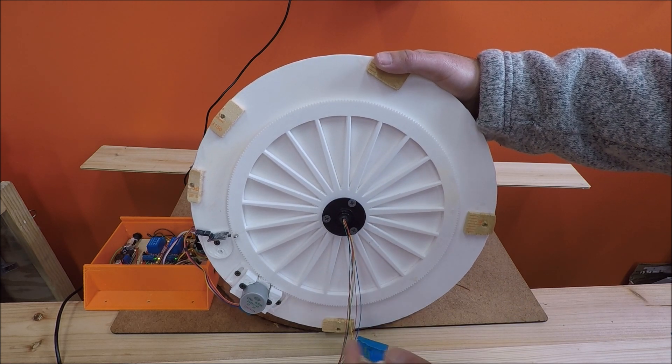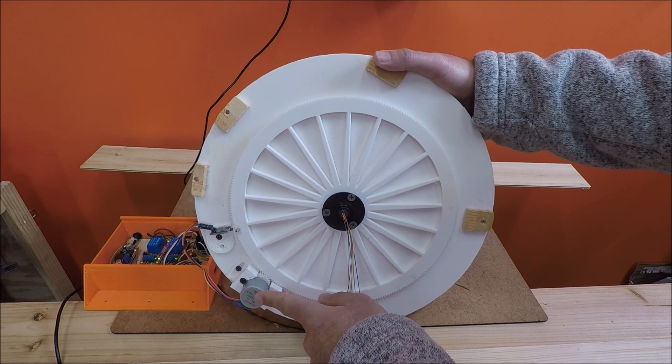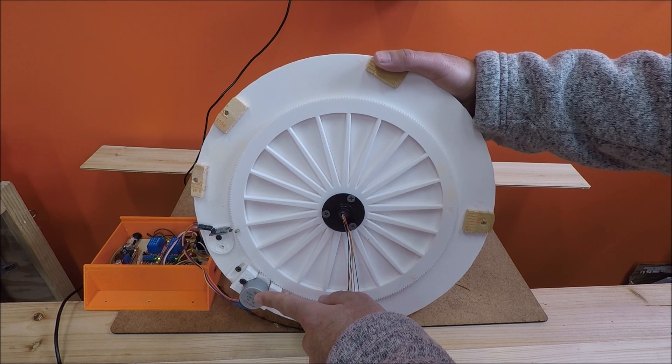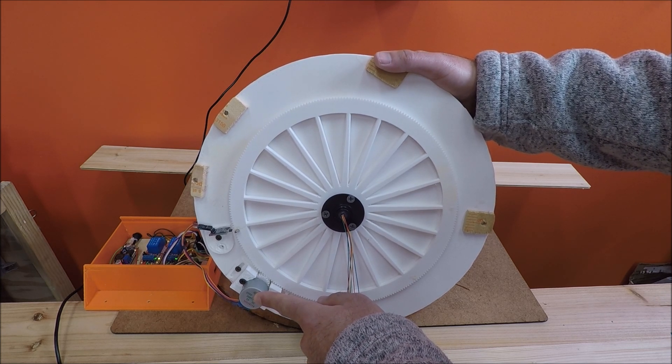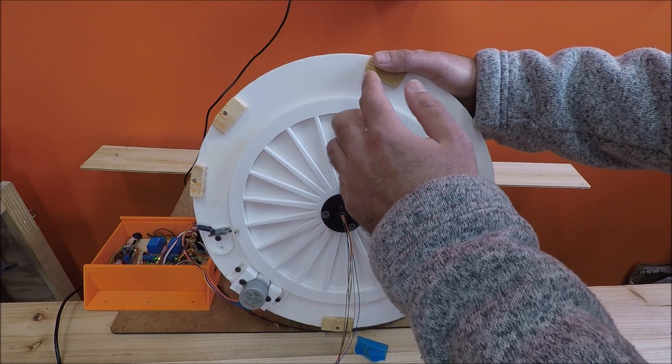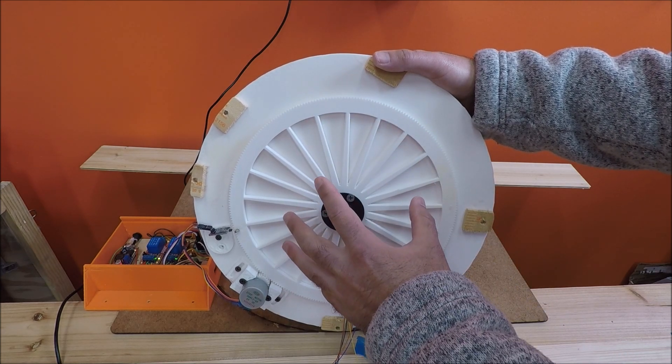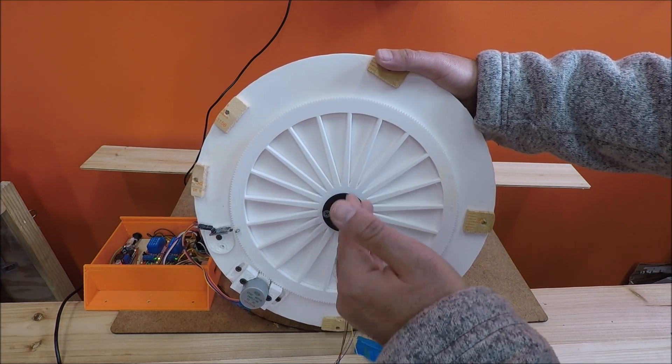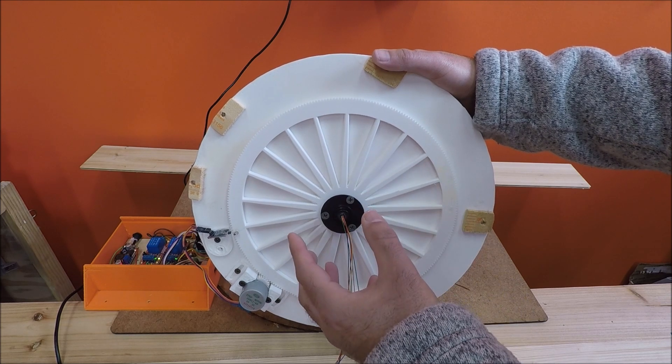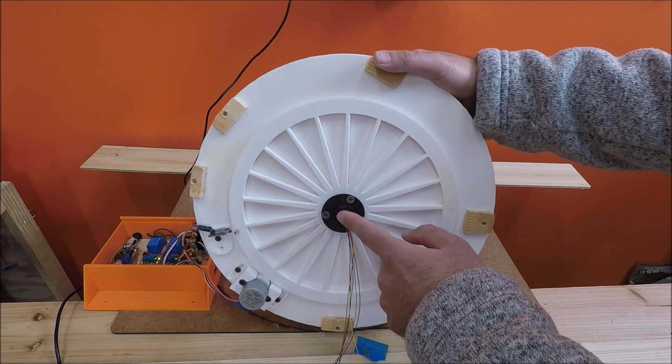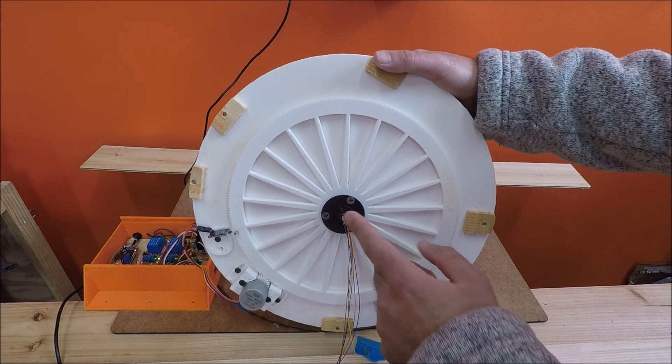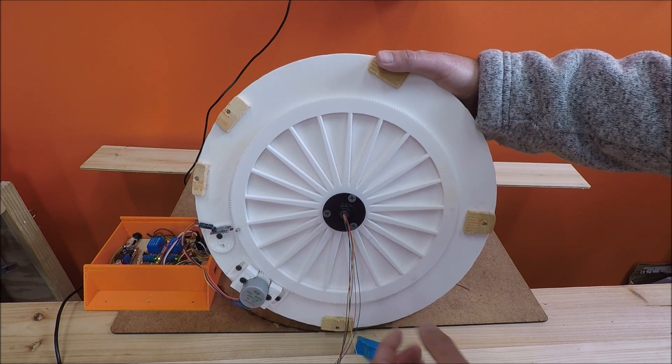So a small stepper motor like this has 200 steps per revolution. 200 steps per revolution really isn't a lot. Whenever you take into account how big the turntable is, if you broke this turntable up into 200 pieces and then if you tried to just take this stepper motor and tie it directly to the turntable, it won't work. It just doesn't, it's not granular enough.